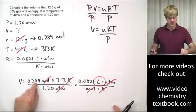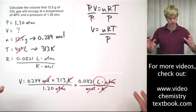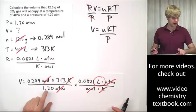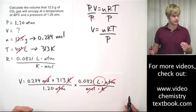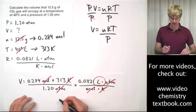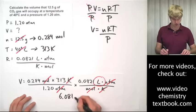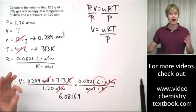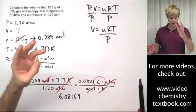Now, the math I'm going to do, I'm going to do this times this times this altogether, then divided by 1.20 ATM, and I'm going to get 6.08169. How many significant figures do I round it to? I round it to 3.